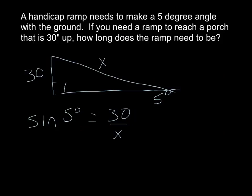So sine of 5 degrees equals opposite over hypotenuse, so that's 30 over x. You need to cross multiply, that means move the x to the other side, and then probably divide by sine 5, and put it in the calculator.